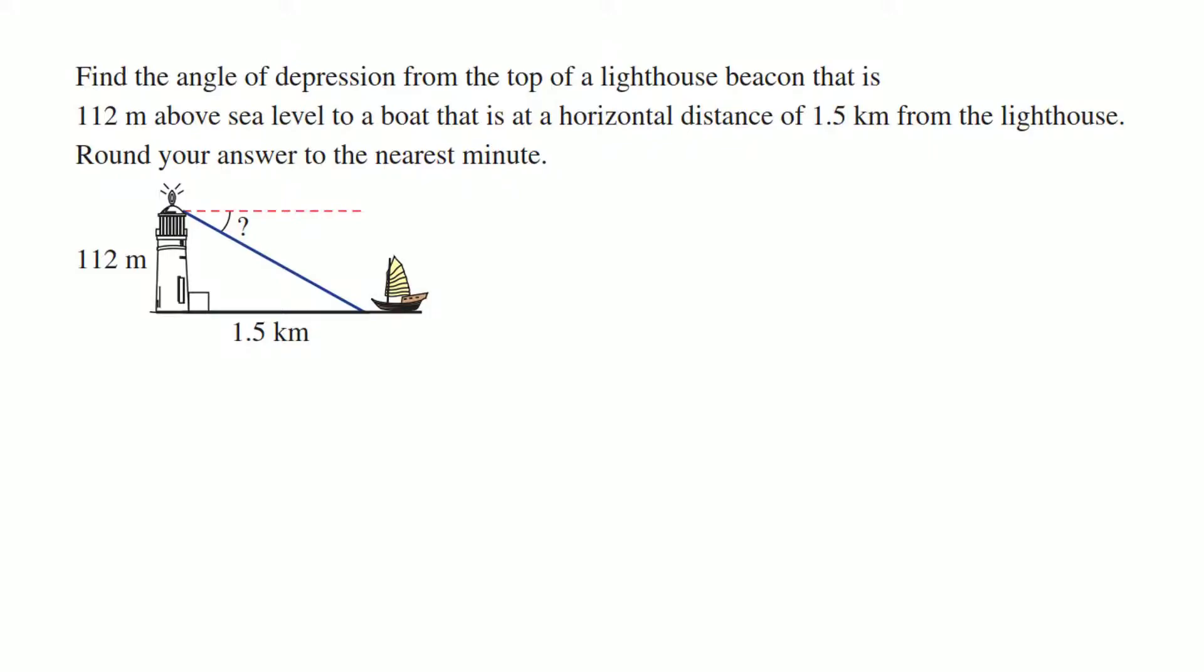Last one I'll do. Find the angle of depression. That just means angle down from horizontal, as marked in the picture. From the top of a lighthouse beacon that is 112 meters above sea level, to a boat that is a distance of 1.5 kilometers from the lighthouse. And so the first thing I would do here, see how the question mark isn't really in the triangle. So I tend to like using alternate angles to say that the question mark that I've put in there is equal. So it forms a little zigzaggy shape with the parallel lines, because both the red dashed line, because the red dashed line is horizontal. You could find the kind of angle inside here if you want, and then subtract it from 90 degrees. But I prefer just using alternate angles.